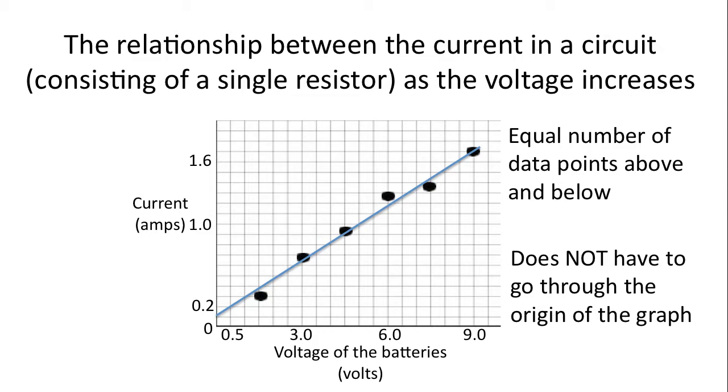Notice that this particular line of best fit does not go through the origin of the graph. That may be common in some experiments and in fact that may have some meaning when it doesn't go through the origin of the graph. So don't try to force your line of best fit through the origin.